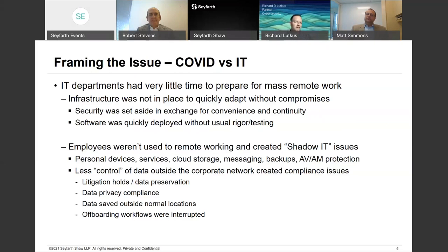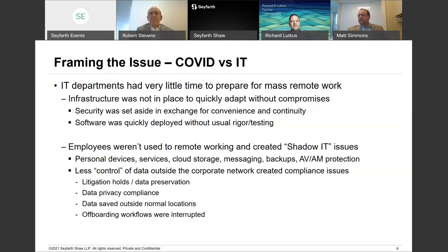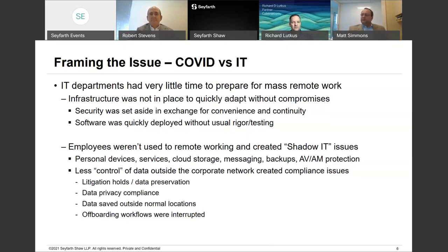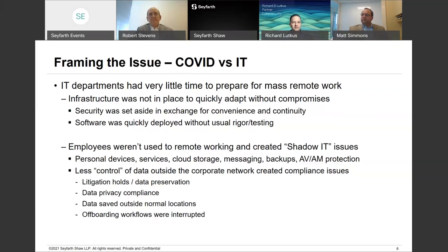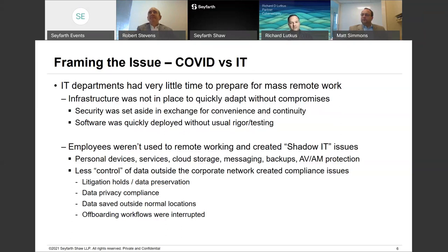Security was set aside or deprioritized behind convenience and business continuity — workers needed access to what they needed. Software was deployed quickly without the usual amount of testing and validation to support these remote workers. Employees started doing things their own way, not using all the official enterprise-licensed software. They started saying, 'I'm going to use my phone, I'll use Dropbox, I'll do whatever I have to do to get my work done.' People did whatever they could with whatever they had, going outside the norms corporations expected. Personal devices began connecting to organizational networks without adequate antivirus or anti-malware software — untrusted devices connecting to corporate networks.